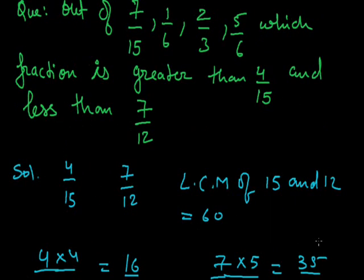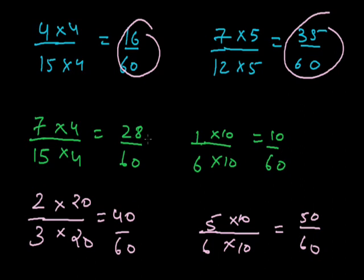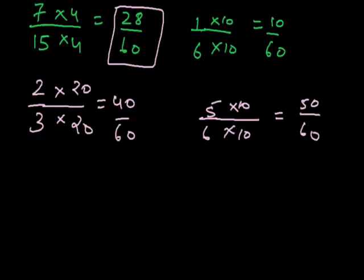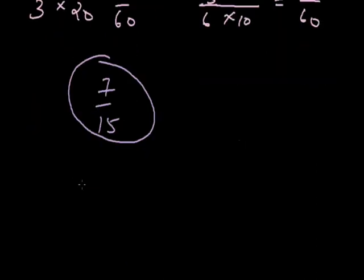Now, it is asked in the question that we have to find a fraction which is greater than 4 by 15, that is, greater than 16 by 60, and less than 35 by 60. I can see that 28 by 60, 40 by 60, and 50 by 60 are greater than 4 by 15. But I have to find the number less than 35 by 60. So, the number less than 35 by 60 is 28 by 60. This number satisfies both the conditions. So, the number which is greater than 4 by 15 and less than 7 by 12 is 7 by 15. To compare any two or more fractions, we have to first convert the fractions to like fractions with the same denominator, and then we can easily compare the fractions.